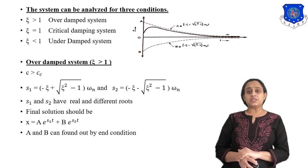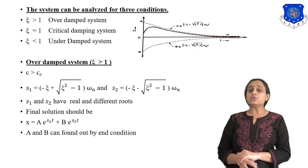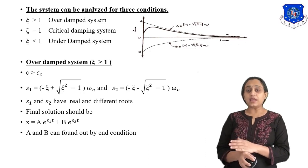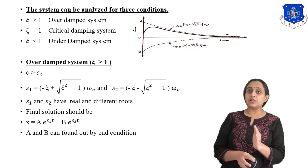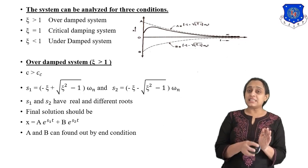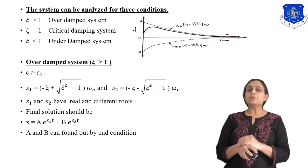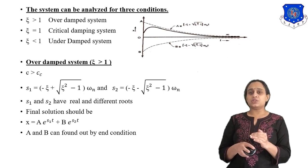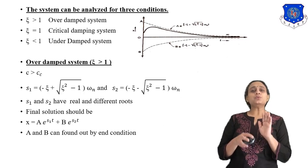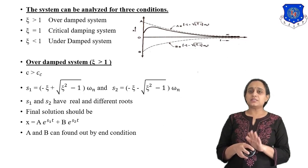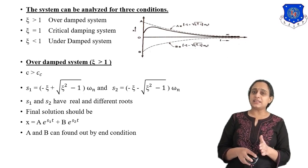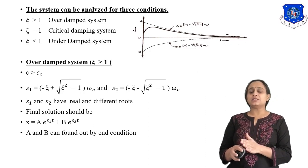Suppose we have to study the over-damped system, where zeta is greater than one. It means c divided by cc is greater than one, so c is greater than cc. The equations of the system are s1 and s2: s1 equals minus zeta plus under root of (zeta squared minus one) times omega_n, and s2 equals minus zeta minus under root of (zeta squared minus one) times omega_n.